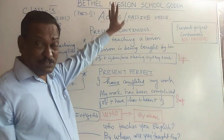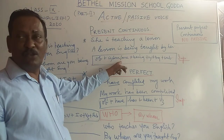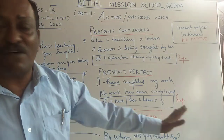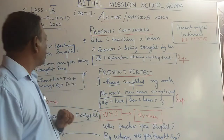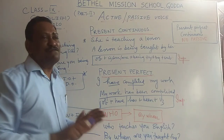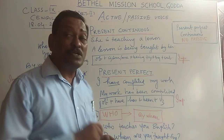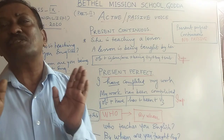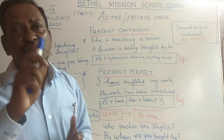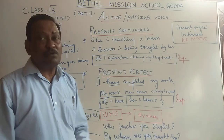I hope you are clear with these two tenses — how we convert present continuous into passive and how we convert present perfect into passive. Both formulas have been given. Now there is another form of passive: how do we change sentences which begin with the question word 'who'? 'Who' is a WH question word. For example: 'Who teaches you English?' This is in the present simple but starts with 'who'.